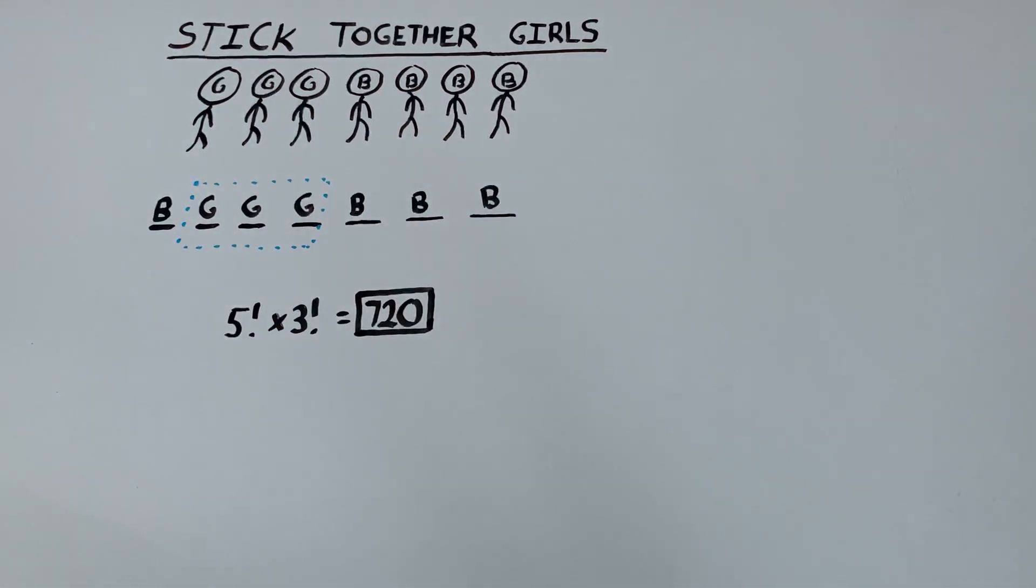So that's seven hundred and twenty different ways that the seven children can be arranged in a row of seven chairs such that all three girls stay together.